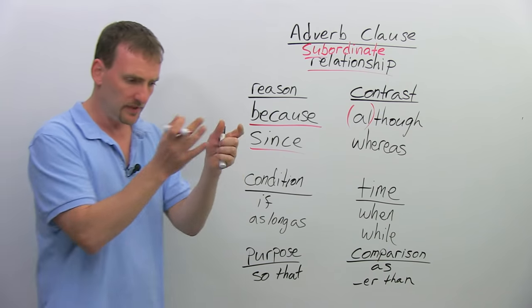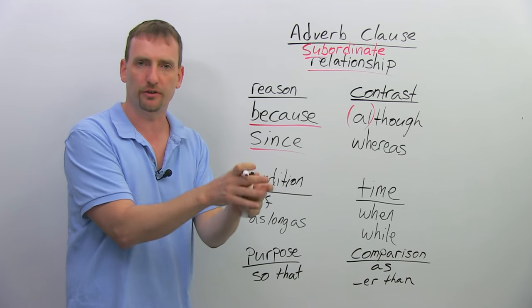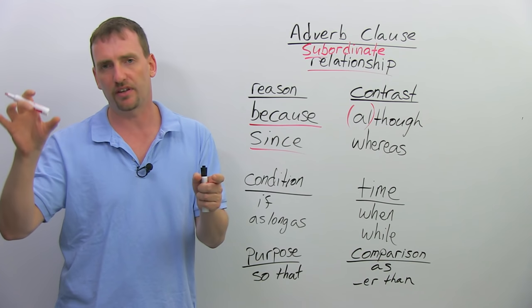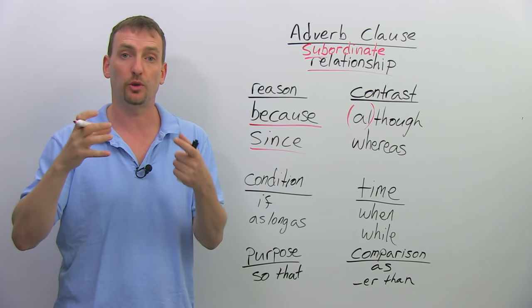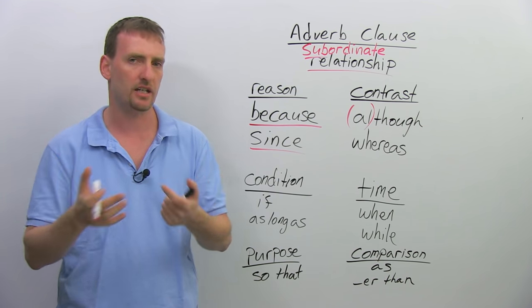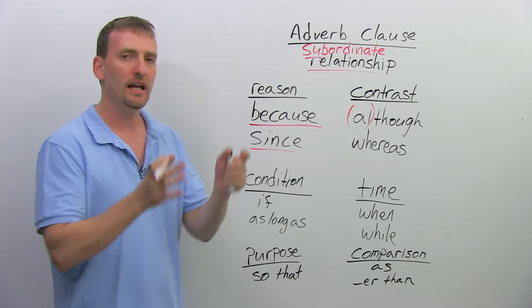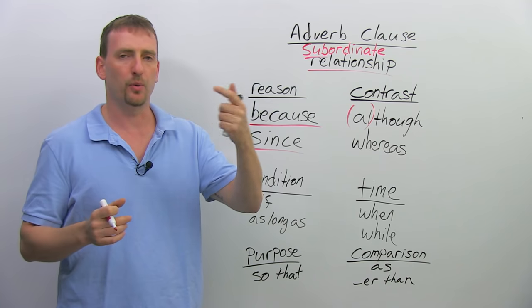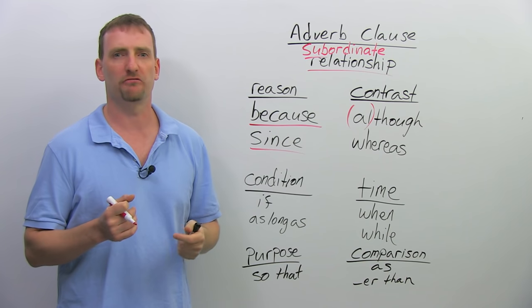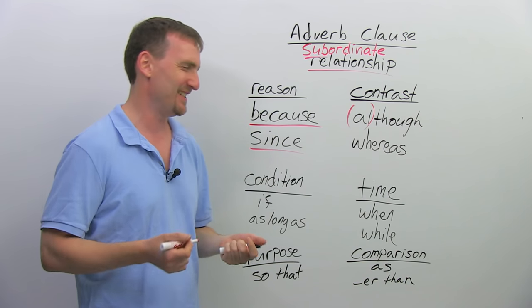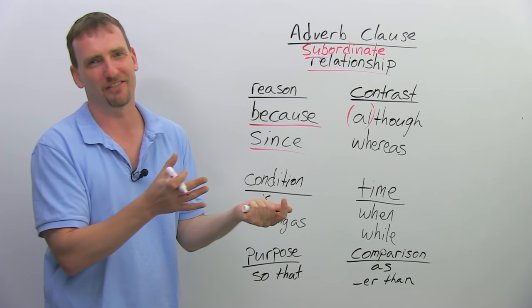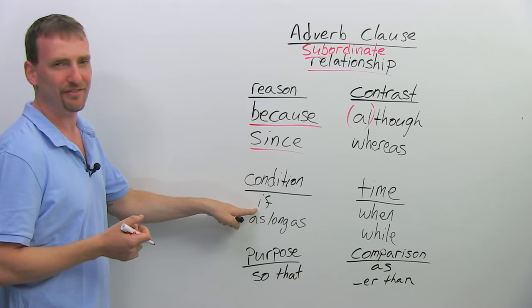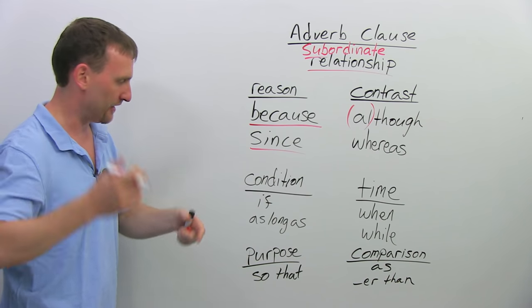Condition means one thing must be true for something else to be true. For the independent clause to be true, the condition must first be true. "If I were a rich man, I would buy a Lamborghini. But even though I am a rich man — although I'm a rich man — I can't afford one." We use "if," "as long as," and others for condition.